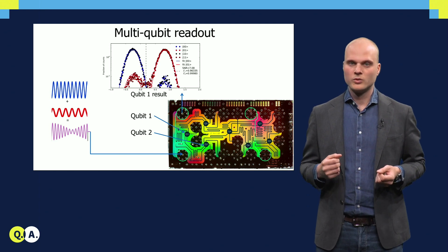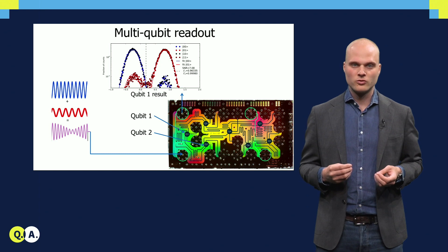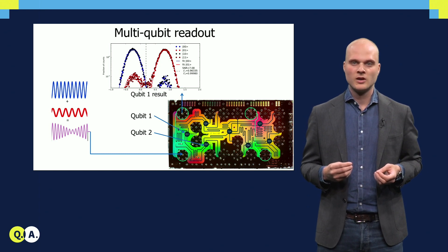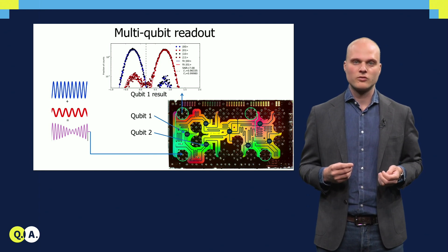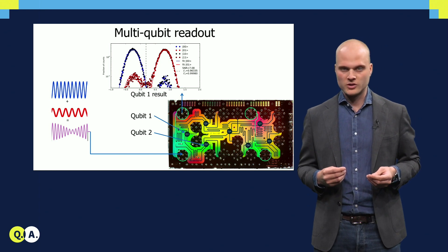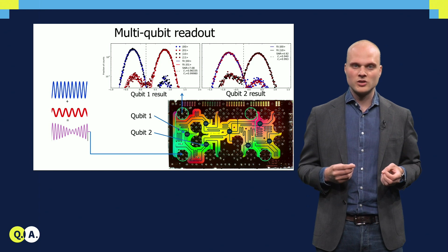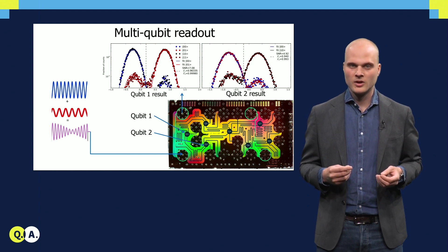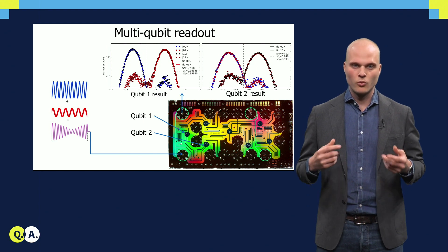Here, we show the readout results for qubit 1, for each of the four possible two qubit basis states, indicating that the signal practically only depends on the state of the targeted qubit, separating 00 and 10 from 01 and 11. Dually, we here show the readout results for the other qubit, which separate 00 and 01 from 10 and 11.